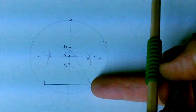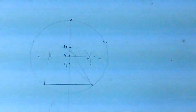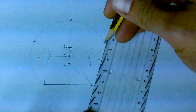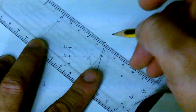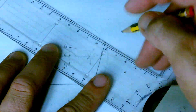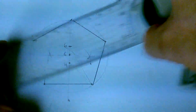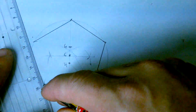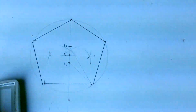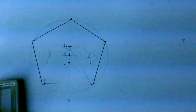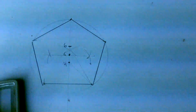Count around the circle: one, two, three, four, five — and that's your regular pentagon, using only the 45 degree angle and the 60 degree angle.